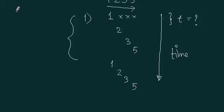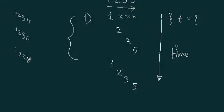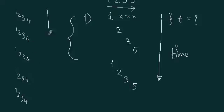I will write down this: 1, 2, 3, 4 — counting five sets of four digits. So, 5 into 4, that is 20 digits are over.